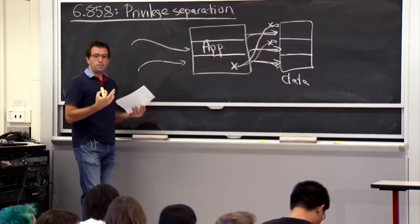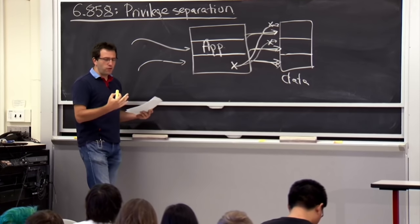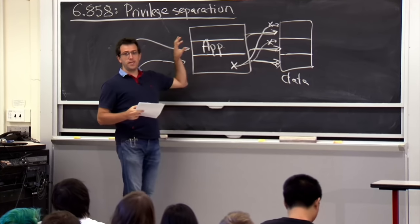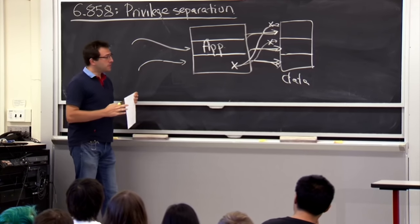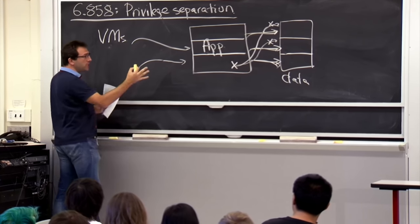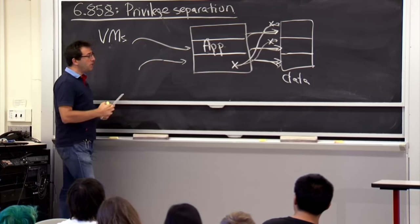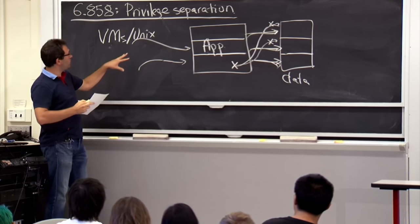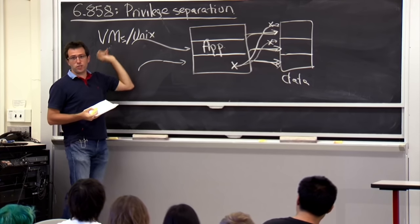This is the big idea behind privilege separation, and it's hugely powerful. It doesn't really rely on buffer overflows specifically — it's just a general architecture for making sure vulnerabilities in one place don't affect the rest of the system as much as possible. This is used pretty widely. Virtual machines are often used for enforcing isolation between components, but you could also use Unix to perform this isolation, as we'll talk about — Unix provides quite a number of mechanisms that OKWS uses to achieve privilege separation.